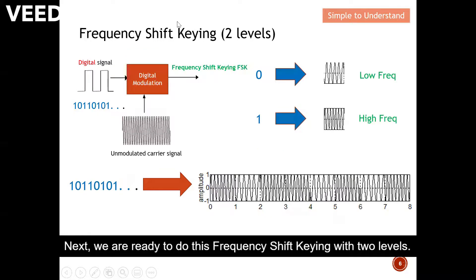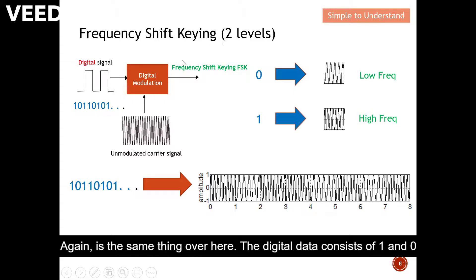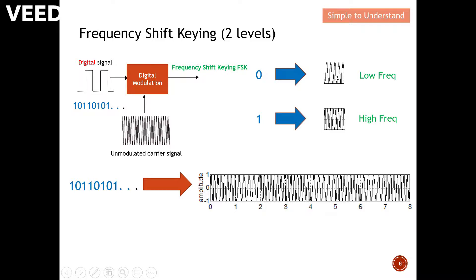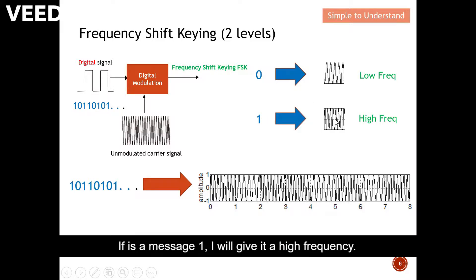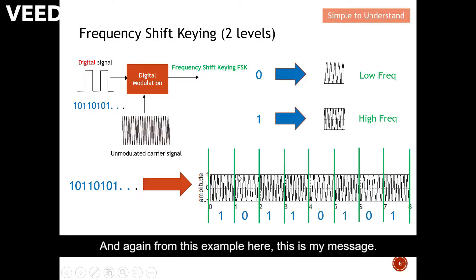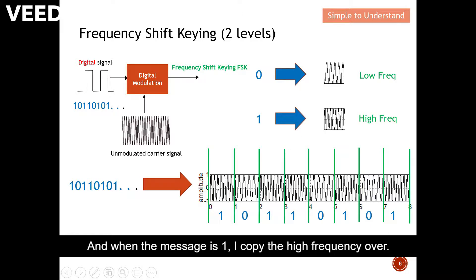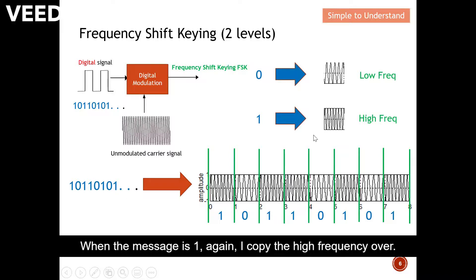Next we are ready to look at frequency shift keying with two levels. The digital data consists of ones and zeros. With the carrier and the modulator output, if the message is zero I give a low frequency, and if the message is one I give a high frequency. When the message is one I copy the high frequency over, and when the message is zero I copy the low frequency over.